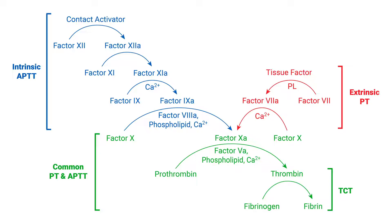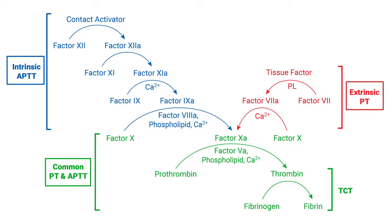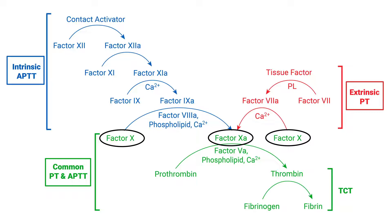Let's talk about in vitro hemostasis, but acknowledge that this is only true in the lab. If we accept that there are intrinsic and extrinsic pathways that converge onto the common pathway, they converge on the rate-limiting step of the common pathway, which is activation of factor X to its activated form, factor Xa. This reaction occurs very rapidly and can be stimulated either by the extrinsic or intrinsic branch in vitro.